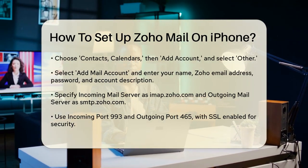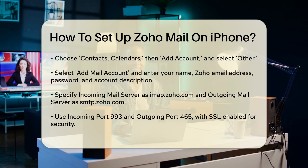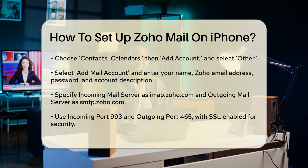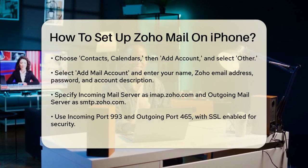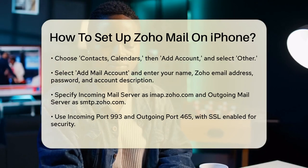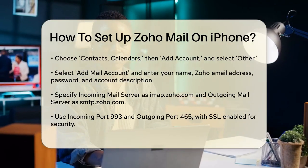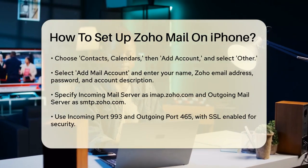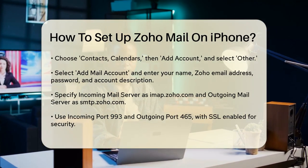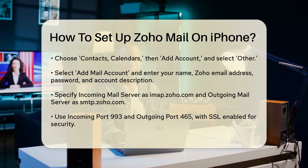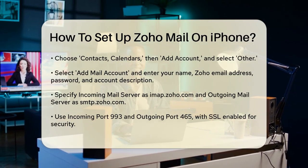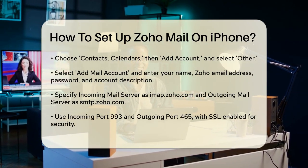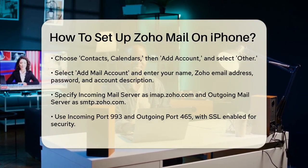For Zoho Mail, the incoming mail server is imap.zoho.com, and the outgoing mail server is smtp.zoho.com. Make sure to use the correct ports: incoming port is 993, and outgoing port is 465, with SSL enabled and authentication required for the outgoing mail server.